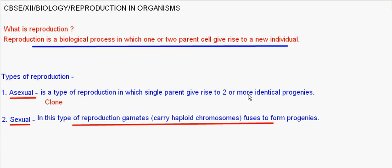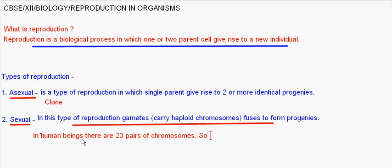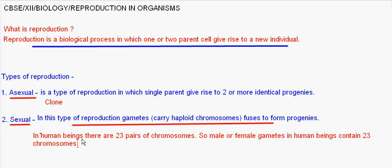For example, in human beings there are 46 chromosomes, or 23 pairs of chromosomes. The male or female gametes in human beings contain 23 chromosomes. These gametes fuse to form new progenies which again contain 23 pairs of chromosomes.